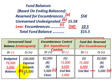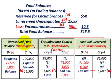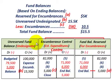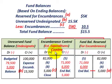The unreserved fund balance, undesignated amount of $15,500 acts like retained earnings on the equity side of the balance sheet in for-profit accounting, but here we're in governmental accounting with the encumbrance system. Following through the T-accounts with their titles gives you a solid understanding of governmental accounting for expenditures using the encumbrance system.